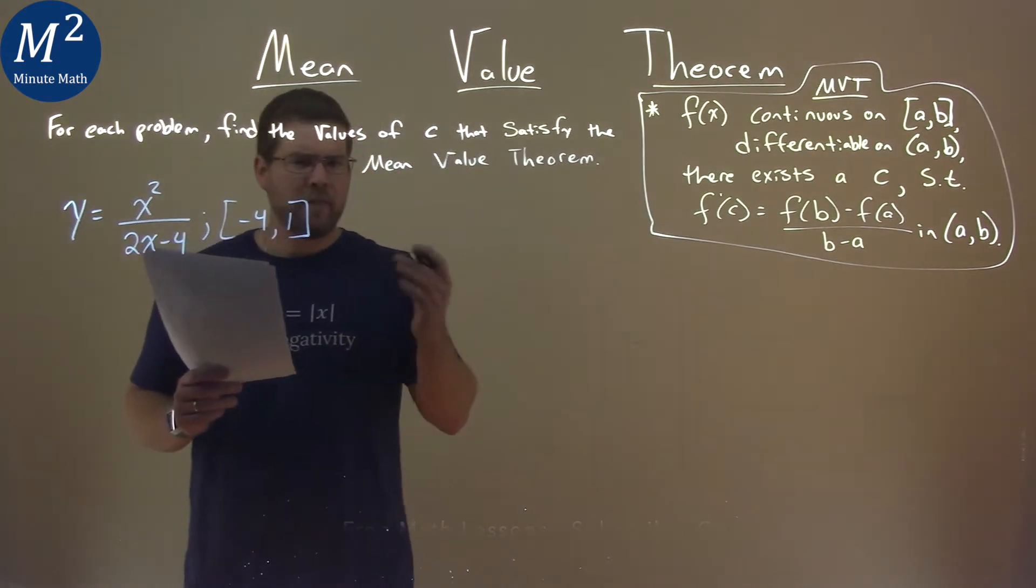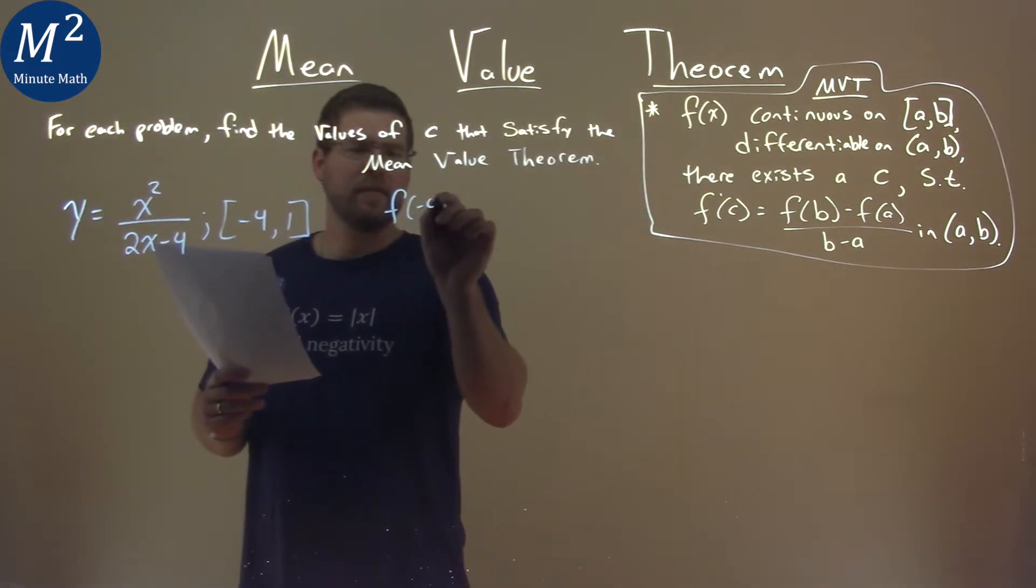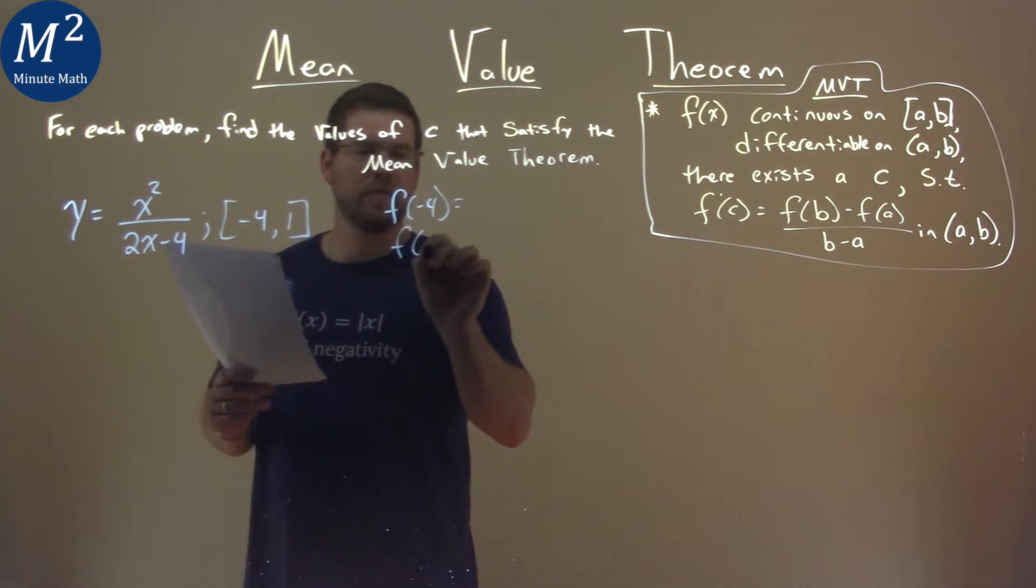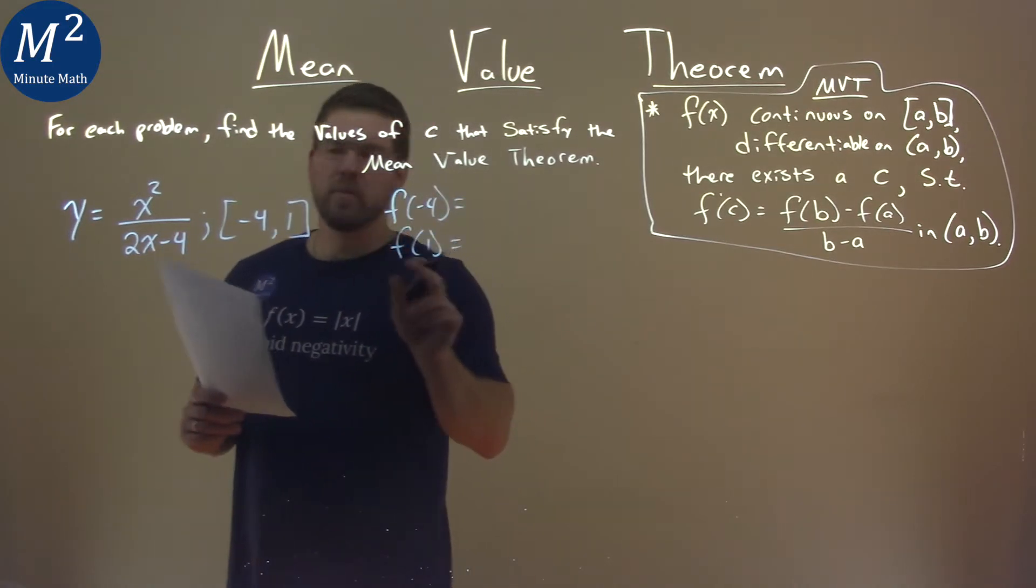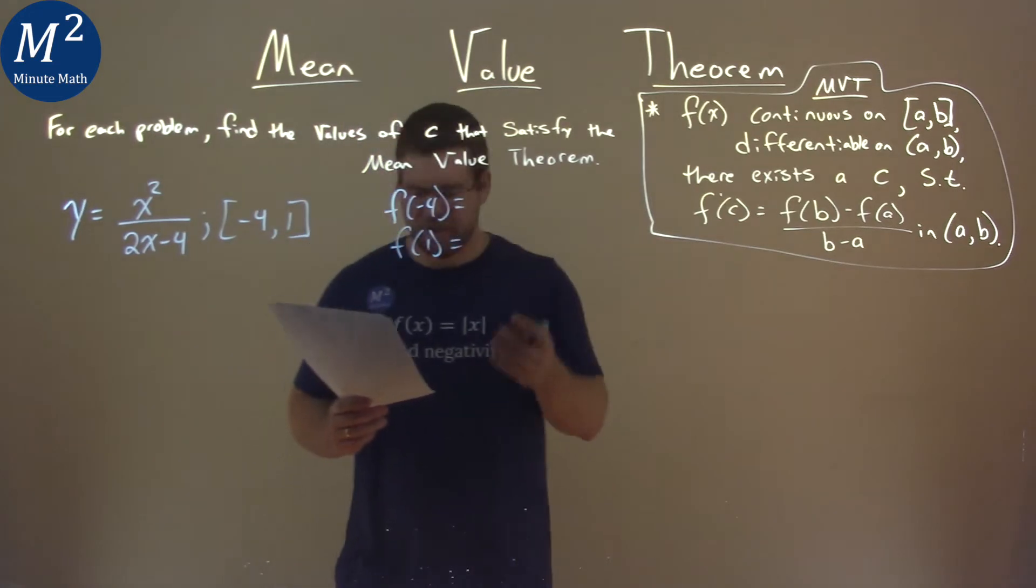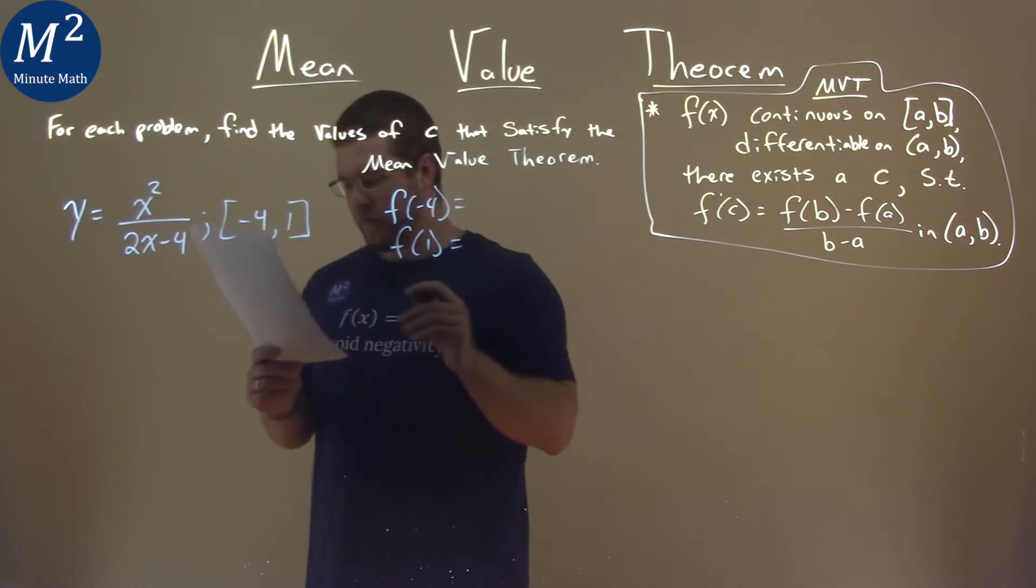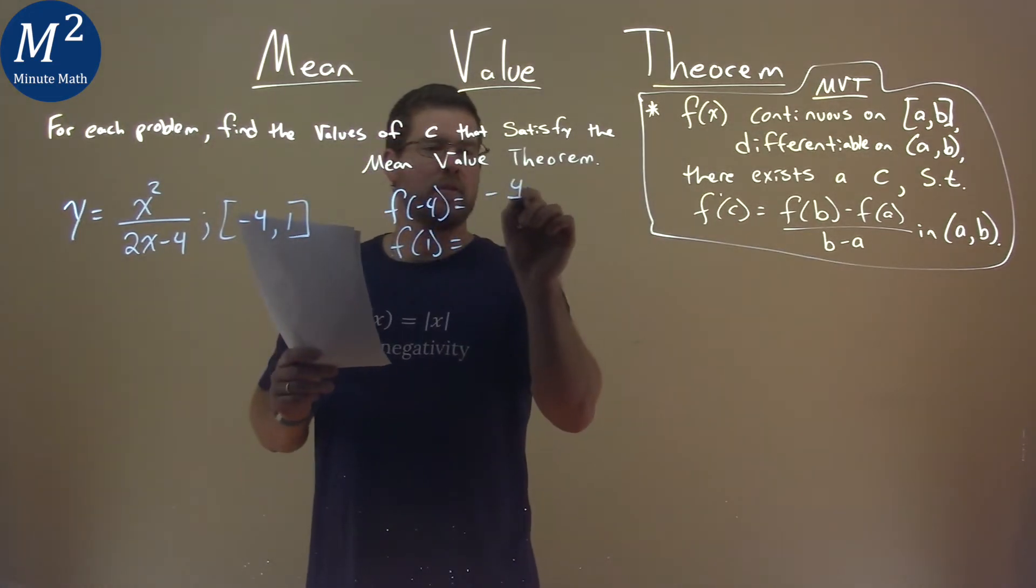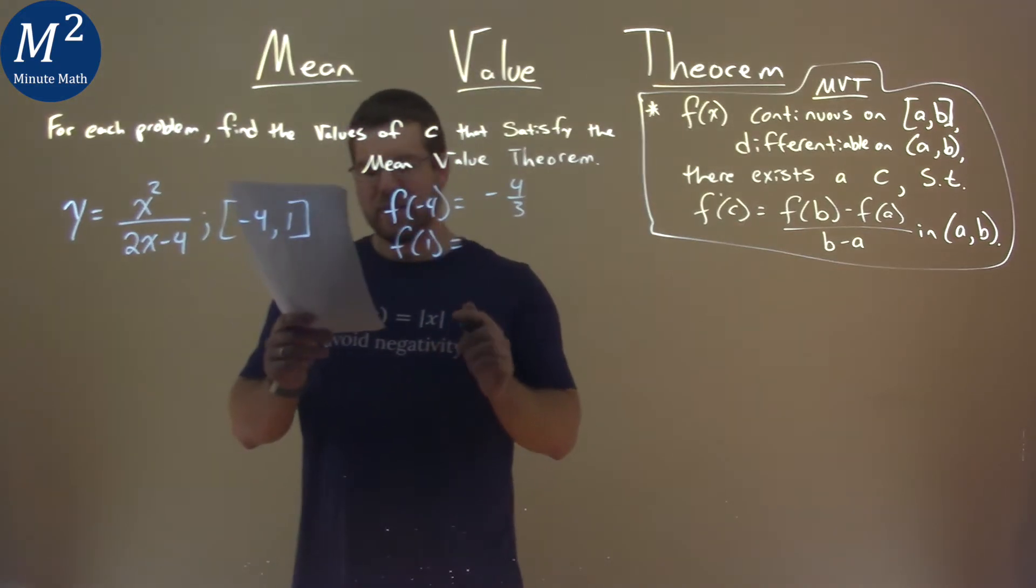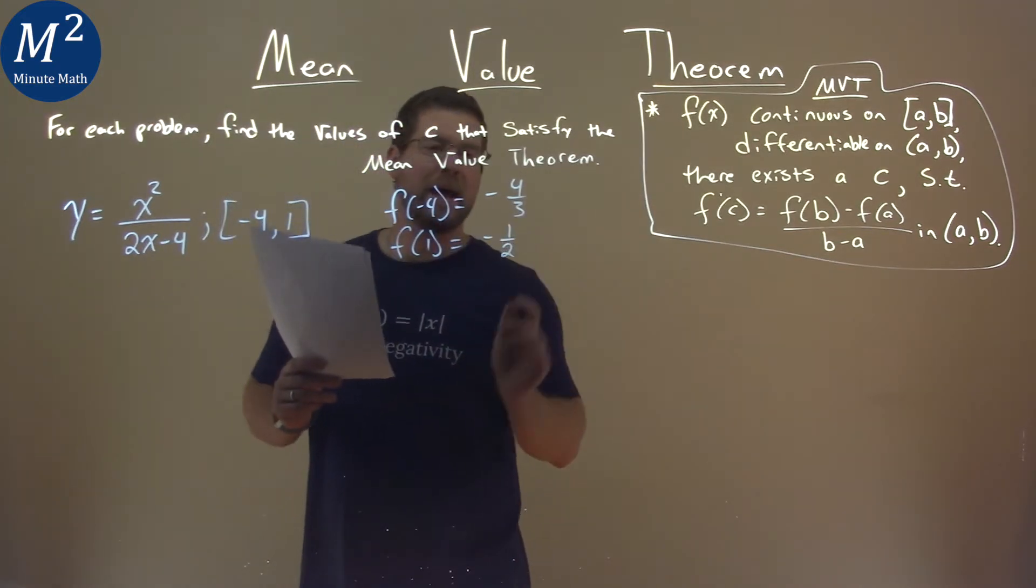Now, we want to find our f of negative 4 and our f of 1. We plug them into our original function, and I found them for you. Negative 4 for x gets us negative 4 thirds. 1 for x gets us negative one half.